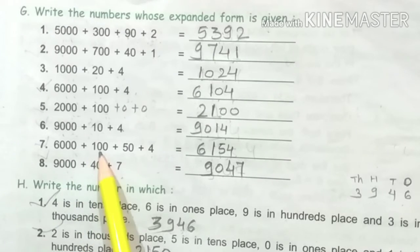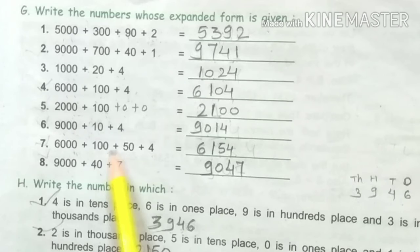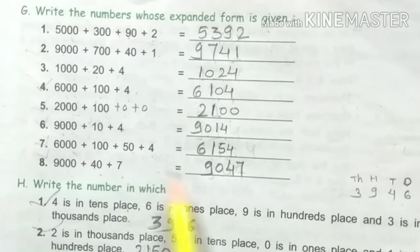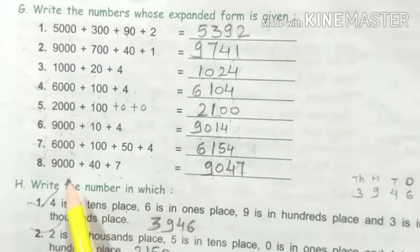6000 plus 100 plus 50 plus 4 equals 6154.